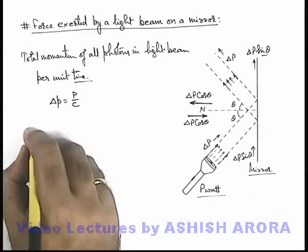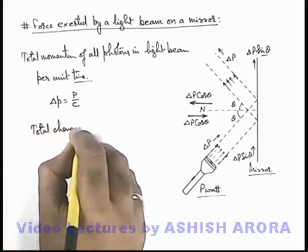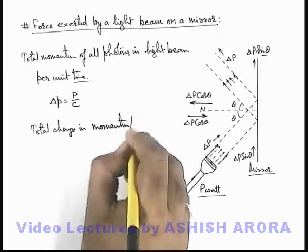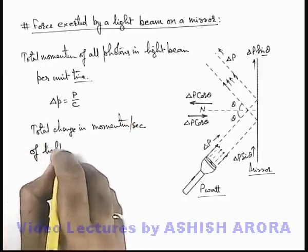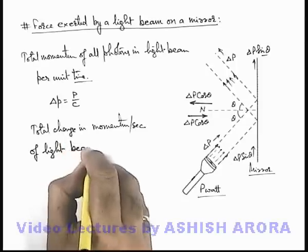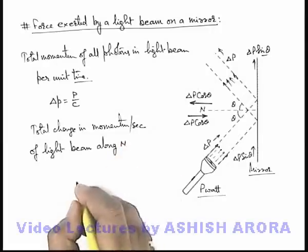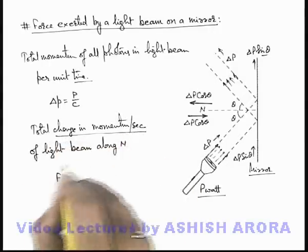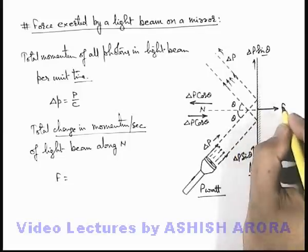So here if we calculate the total change in momentum per second of light beam, then it is only along the direction of normal, then we can write it is along N. And this can be written as force because it is total change in momentum per second, and the force exerted on mirror will be in this direction.